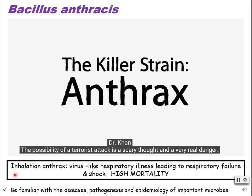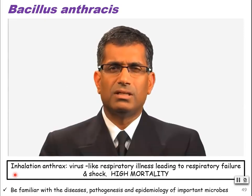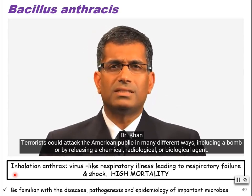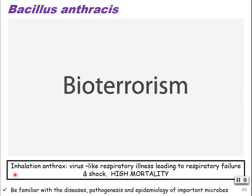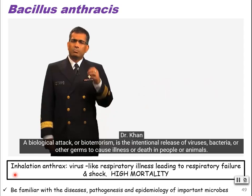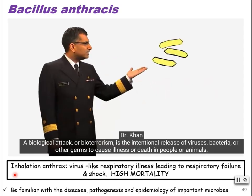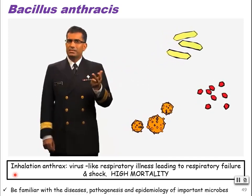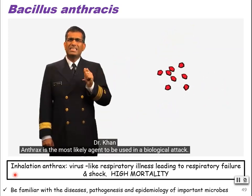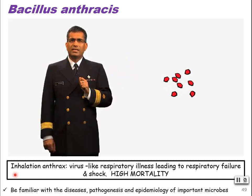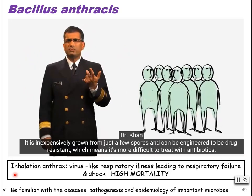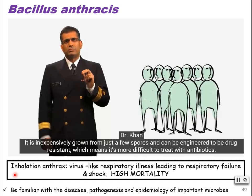The possibility of a terrorist attack is a scary thought and a very real danger. Terrorists could attack the American public in many different ways, including a bomb or by releasing a chemical, radiologic, or biologic agent. A biologic attack, or bioterrorism, is the intentional release of viruses, bacteria, or other germs to cause illness or death in people, animals, or plants. Anthrax is the most likely agent to be used in a biologic attack — it only takes a small amount to infect a large number of people. It's inexpensively grown from just a few spores and can be easily engineered to be drug resistant, making it more difficult to treat with antibiotics.